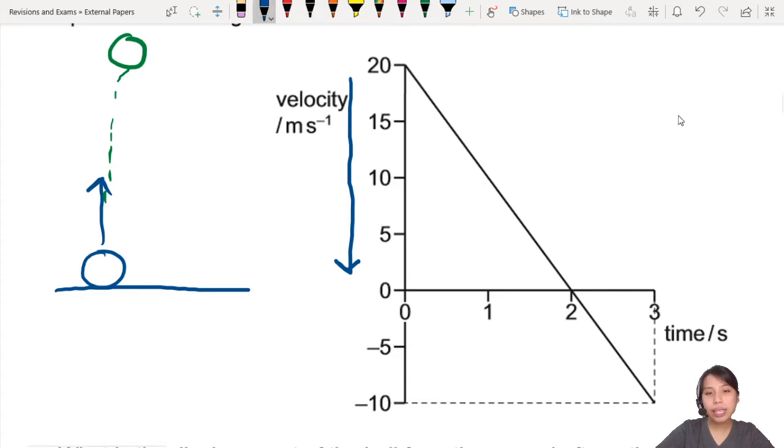And then what happens? Then in the second part, you see it is getting faster and faster. Follow the graph, but in the negative direction. So if you define the first part as positive moving upwards, then the next part will be the ball going down. So this part, and it stops at some point.